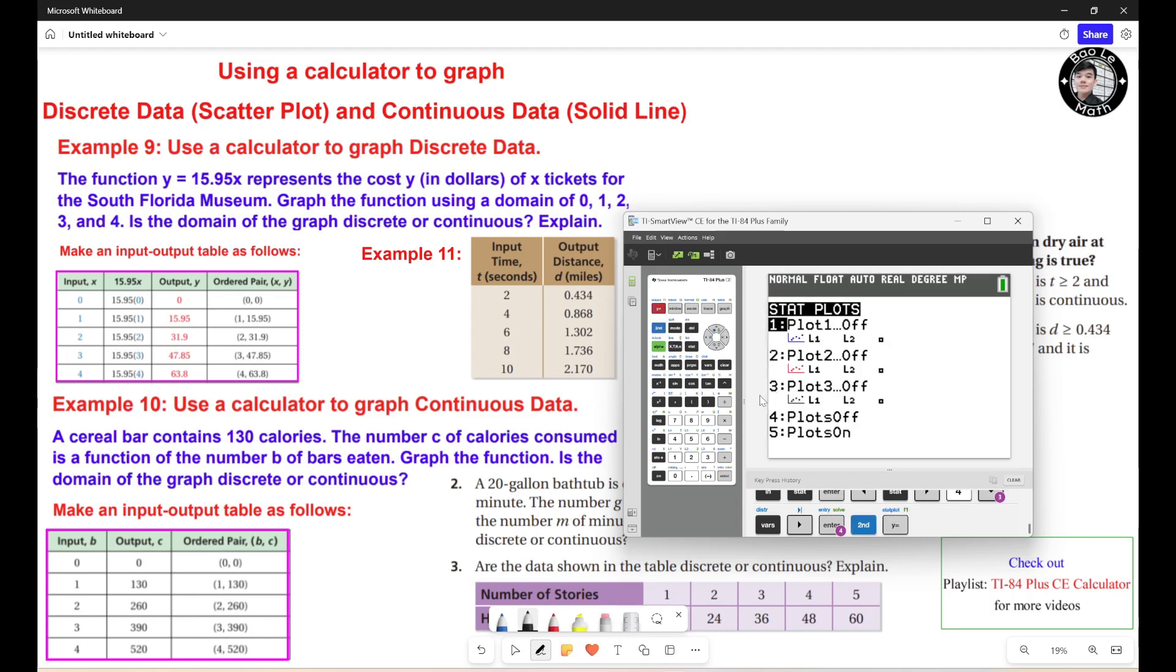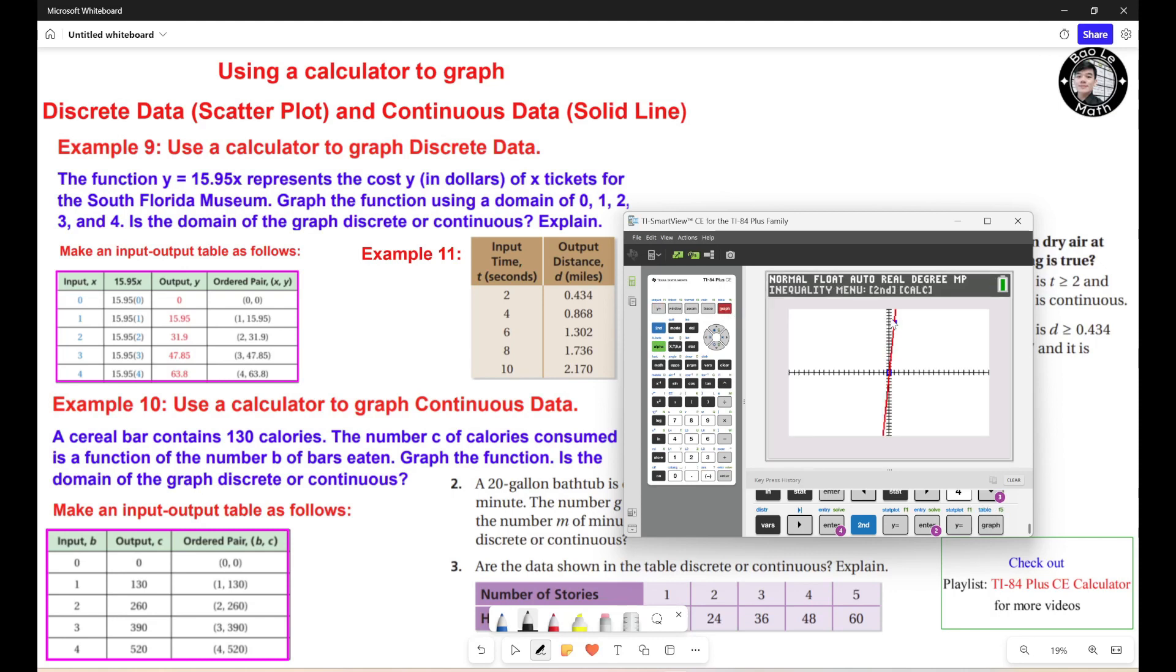Now you need to hit second Y equals. Now we need to sketch a scatter plot, so the first one right here needs to be turned on. You're gonna hit enter. You need to turn on and this one is highlighted right here. This is on. You need to hit enter, on, highlighted. Now you hit Y equals right here, and then you hit graph. It could be like this. The scatter plot could be the blue one, and the trend line should be the red one.